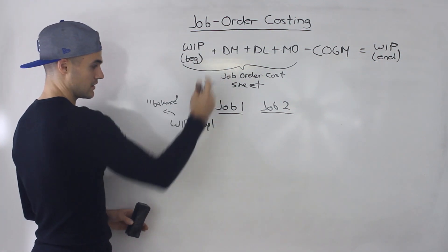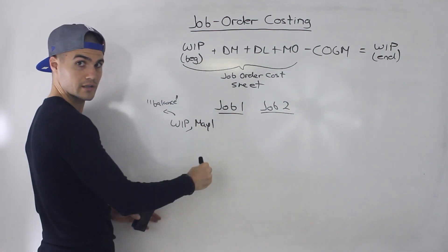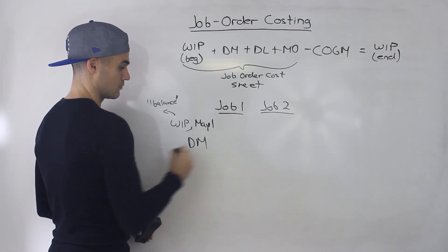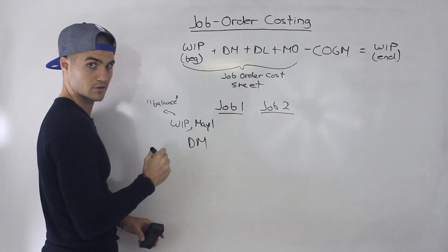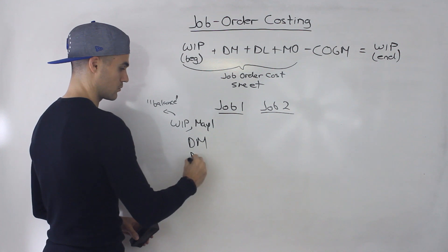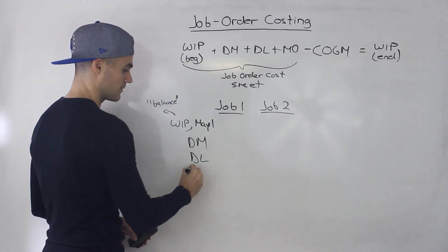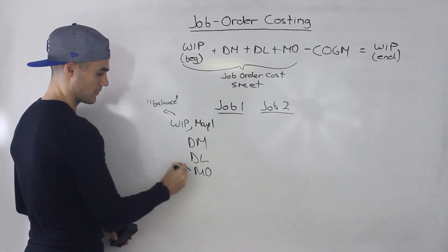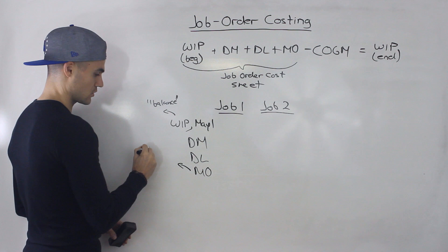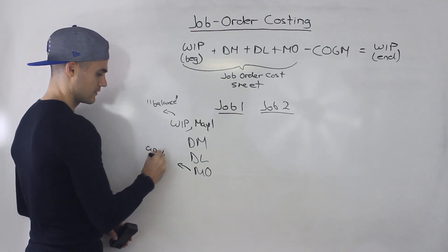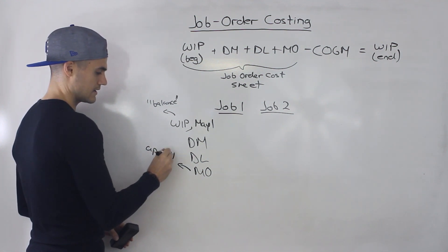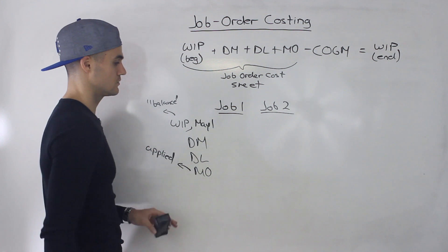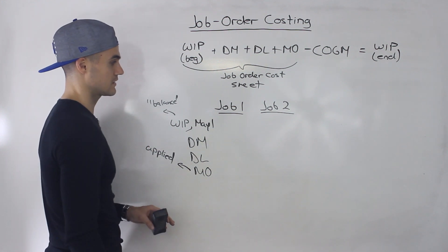During the month of May, you're going to have more direct materials used on the job, more direct labor, and then you're going to be applying manufacturing overhead. Remember, this manufacturing overhead is applied. And then at the end of the period, we do a reconciliation.